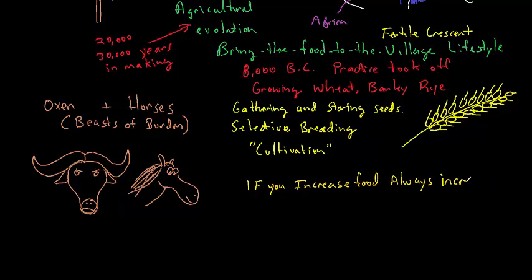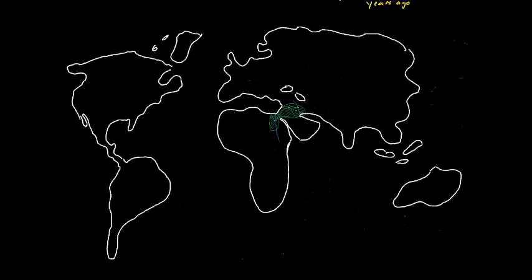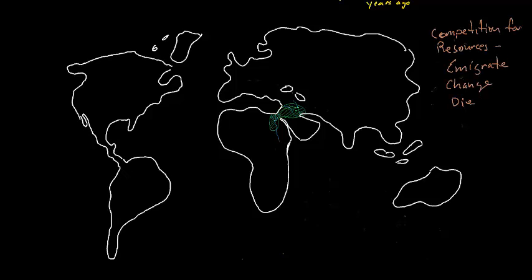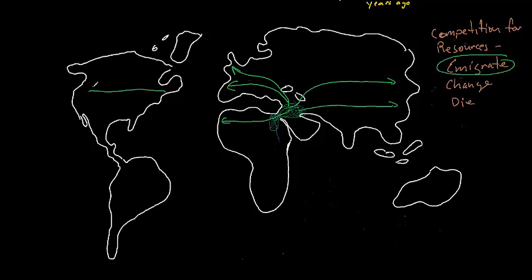And one ecological law that has always followed is that when you increase food, you increase the population. As the population rose, they then had the same choices all populations always have: emigrate, change niches, or die. They chose the former to emigrate, and they began to spread.